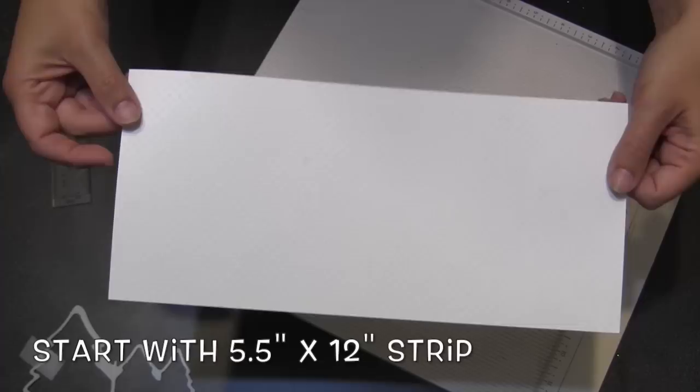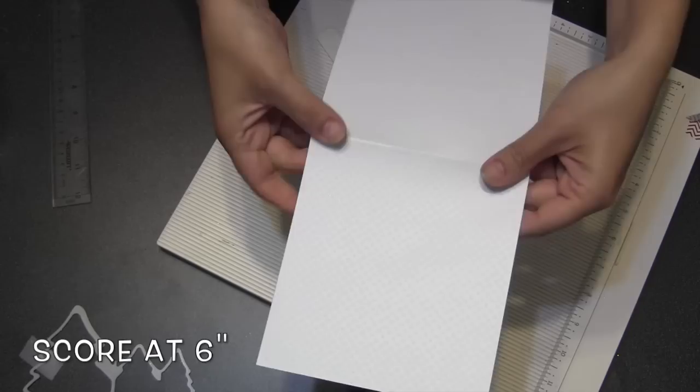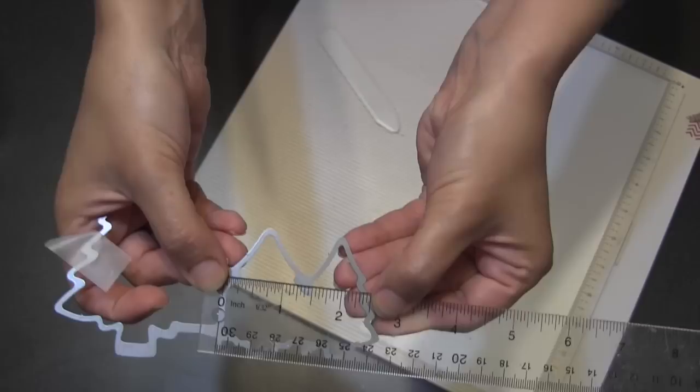To double the Evergreen Pivot Card, I'm going to start with a five and a half inch tall by twelve inch long strip of cardstock. My first step is just going to be to score it right up the middle for folding, so I'm putting it on my scoring board, scoring it at six inches, and that will allow me to fold it in half.